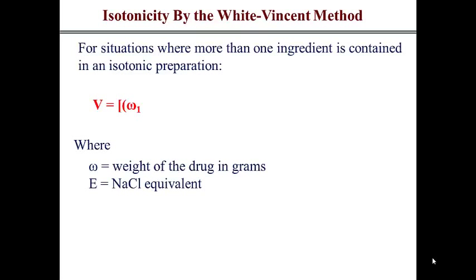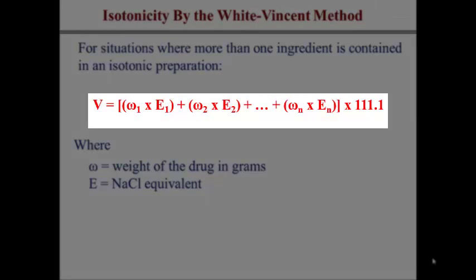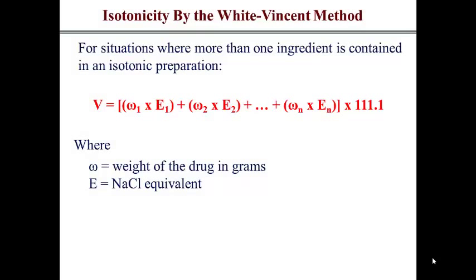Sometimes you have multiple components in your preparation — more than one ingredient. The next example illustrates how you handle that. You use the generalized form of the White-Vincent equation, which contains more terms. The key thing is that the volume is given by the sum of the products of the weight in grams and the E values of your various drugs, all multiplied by the factor 111.1.